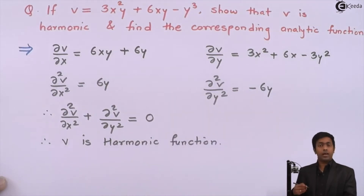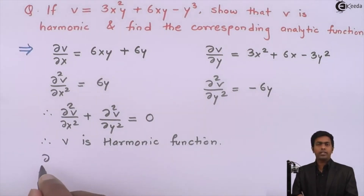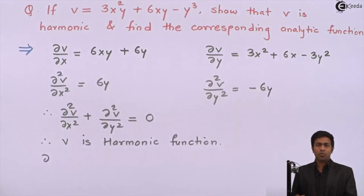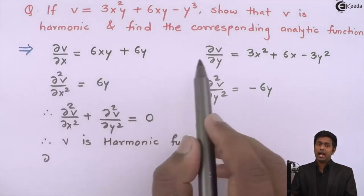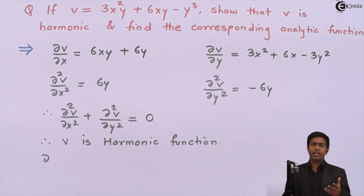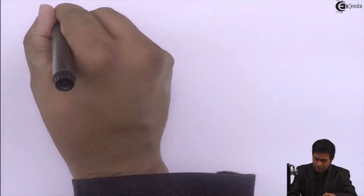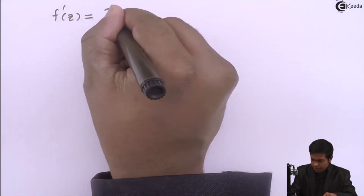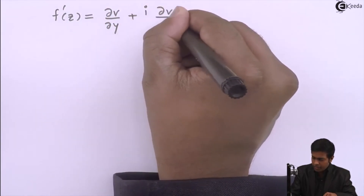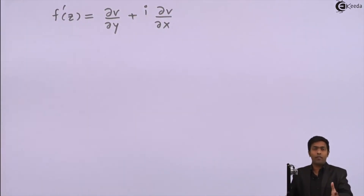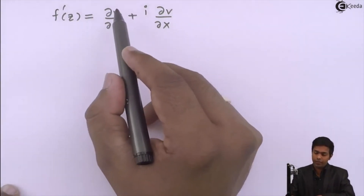Now that we have proved v is harmonic, let us find the corresponding analytic function. We already have the values of ∂v/∂x and ∂v/∂y from the previous steps, so we use the formula for f'(z) in terms of v: f'(z) = ∂v/∂y + i·∂v/∂x. This comes from the property of analytic functions.